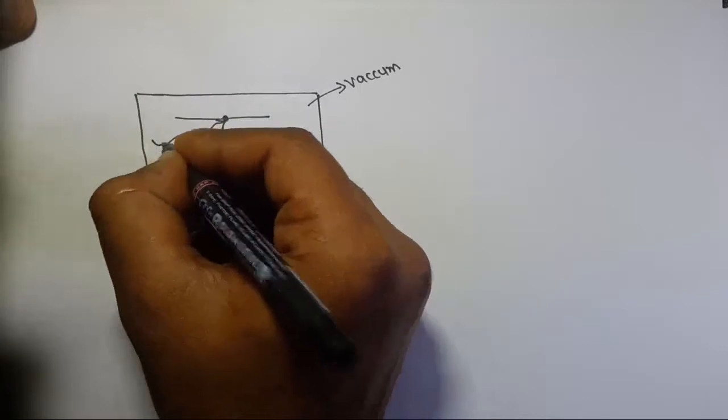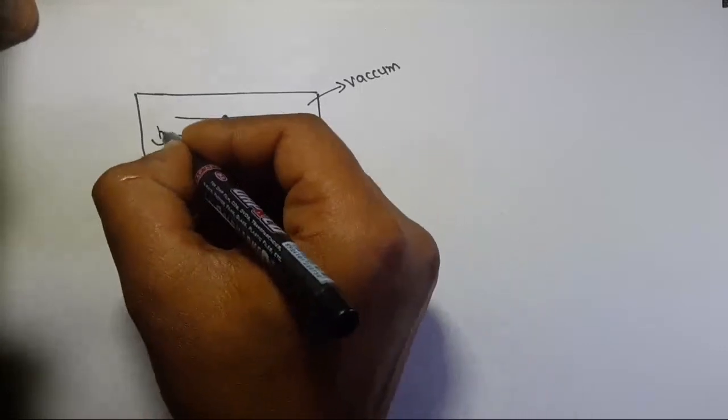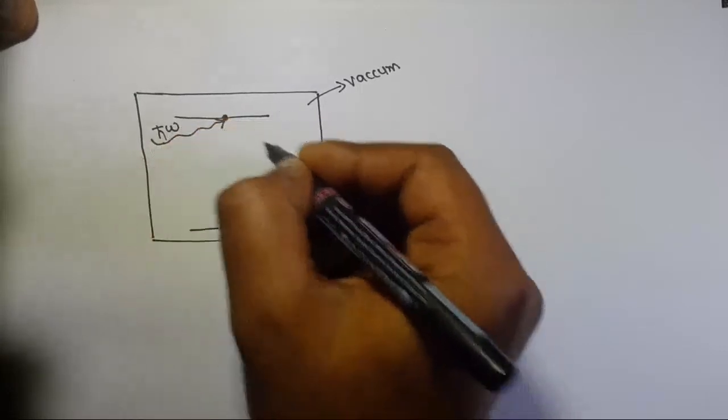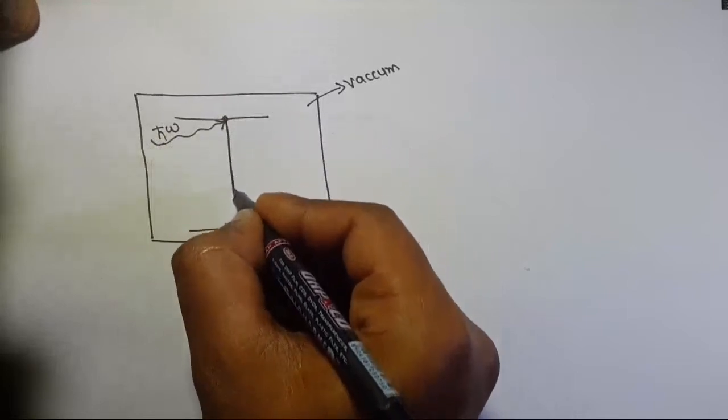Vacuum, which we call vacuum energy or zero, and H bar omega, and this is ground state.